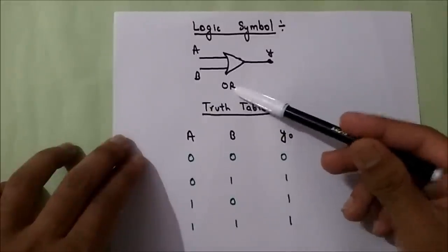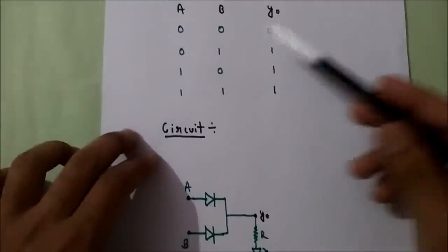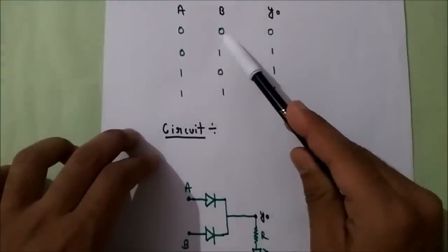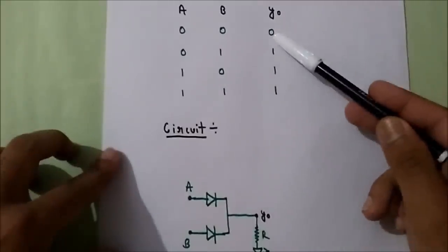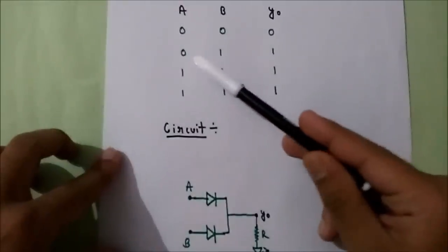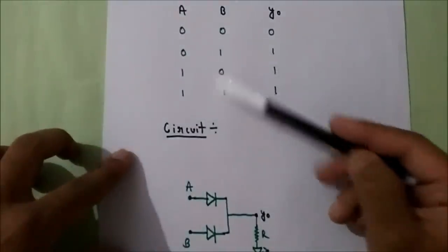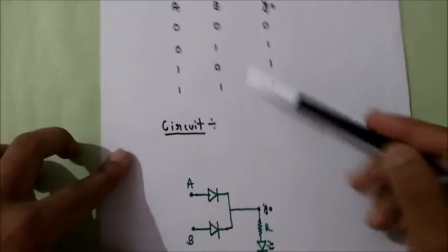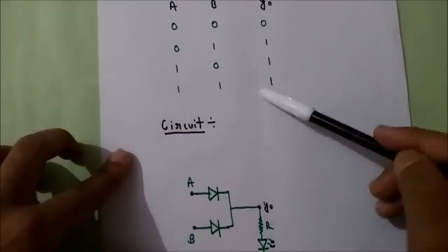This is the logic symbol of an OR gate, this is its truth table, and this is the circuit. If both inputs A and B are 0, then we will get 0 at the output. If any of the inputs is 1, then we will always get 1 at the output. So: 0,1 gives 1; 1,0 gives 1; and 1,1 gives 1.